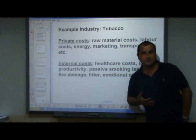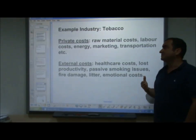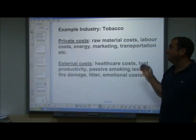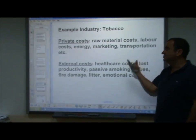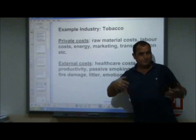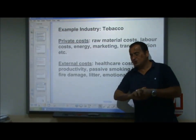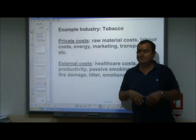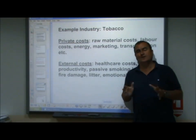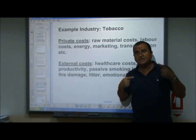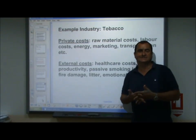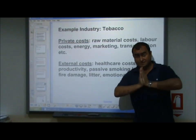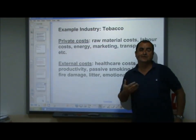Let's take the example of the tobacco industry, which appears on so many examinations. Private costs paid by the buyers and sellers include things like raw material costs, labour costs, energy costs, marketing costs, transportation, tobacco plantations — buying the land, clearing it, growing crops, and all the fertilizers used. All of these are private costs calculated to see whether it's worth doing this economic activity. But in addition, there are very significant external costs when it comes to this product.